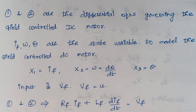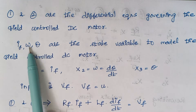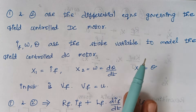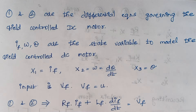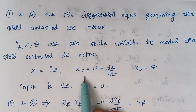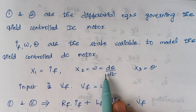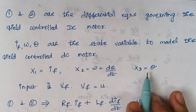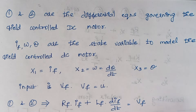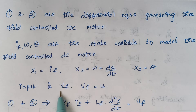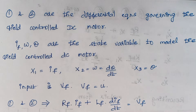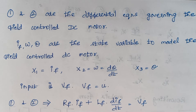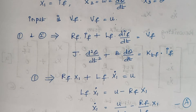Now we select the state variables. The field current IF, omega, and theta are the state variables. So X1 = IF, X2 = omega = dθ/dt, and X3 = theta. The input is the field voltage VF, which equals U.